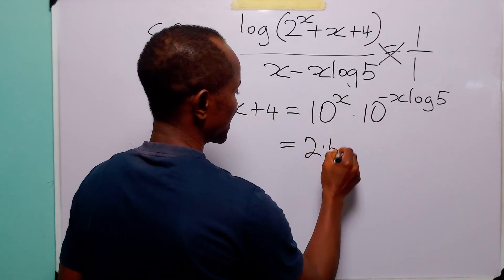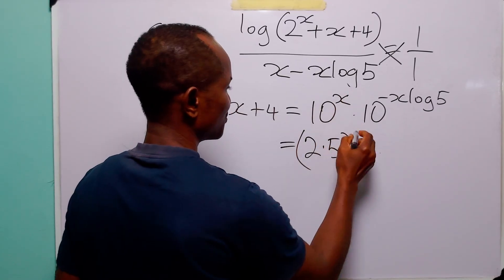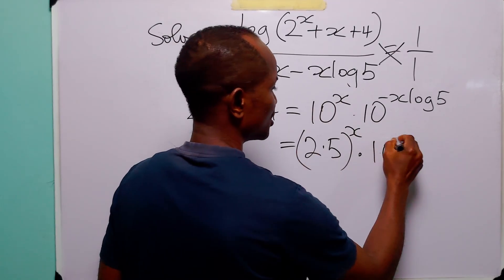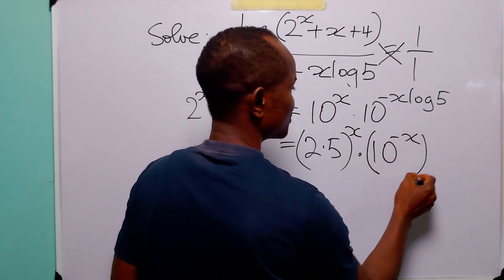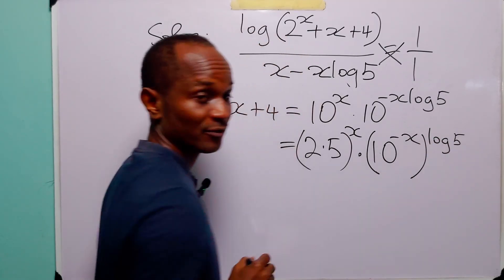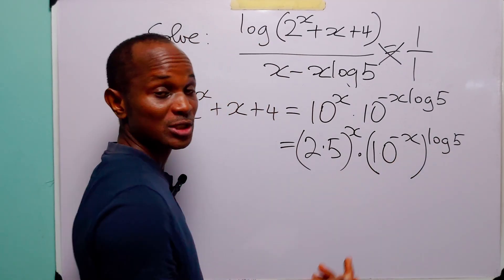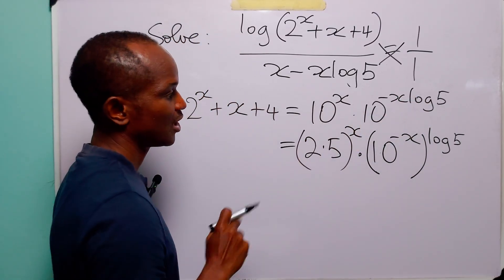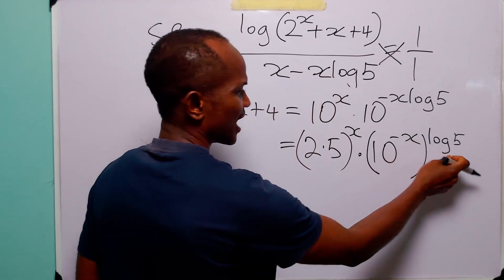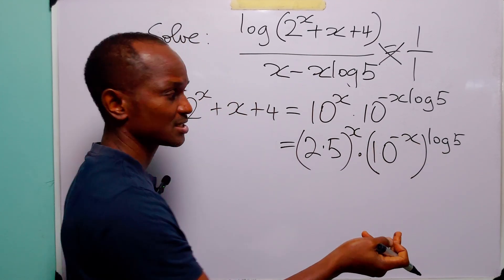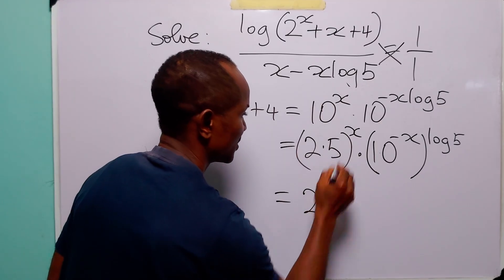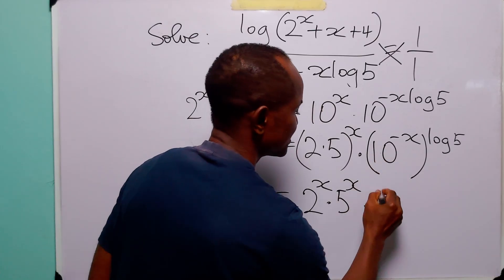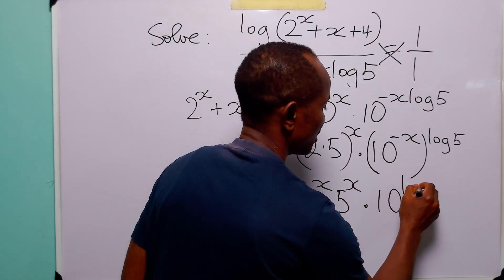Next, let us express 10 as a product of its prime factors: 2 times 5. Both will be raised to the power x. We can also write 10 to the power minus x log 5 as 10 to the power log 5 to the power minus x, because when we have two powers we can multiply them. And this can also be written as 2 to the power x, 5 to the power x, and 10 to the power log 5 to the power minus x.